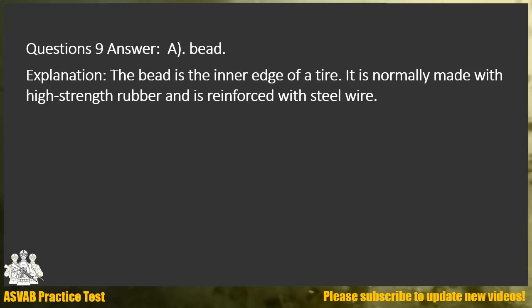Question 9. Answer A. Bead. Explanation: The bead is the inner edge of a tire. It is normally made with high-strength rubber and is reinforced with steel wire.